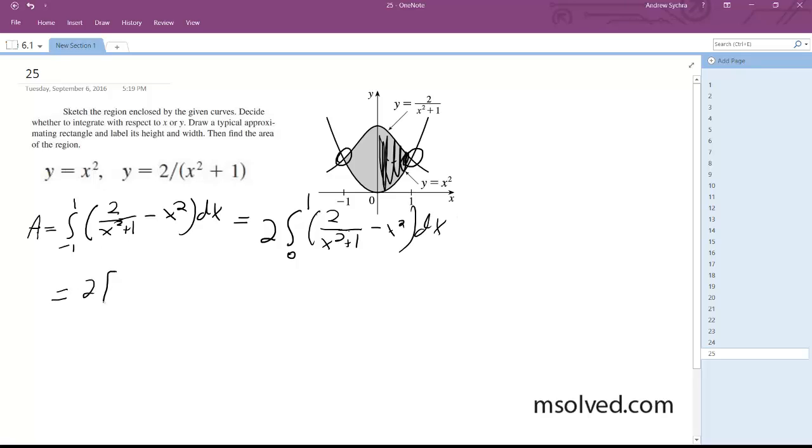This is 2 times an arctangent of x minus 1 third x cubed from 0 to 1, which is equal to 2 times pi over 4 minus 1 third.